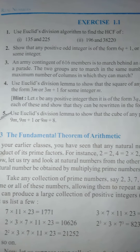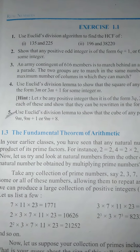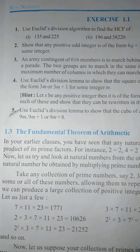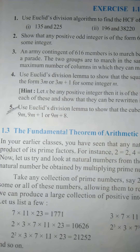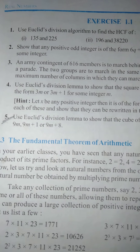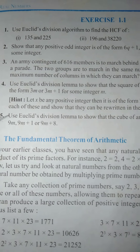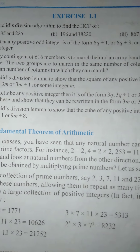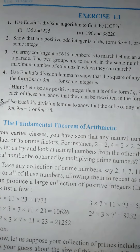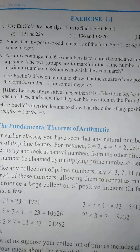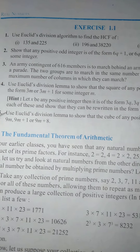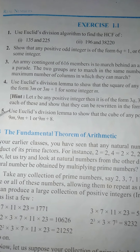Hello students, we will be solving Exercise 1.1 question number 4. The previous questions we have already discussed. So our fourth question from this real numbers chapter is: use Euclid's division lemma to show that the square of any positive integer is either of the form 3m or 3m plus 1 for some integer m. We will be proving this question now.